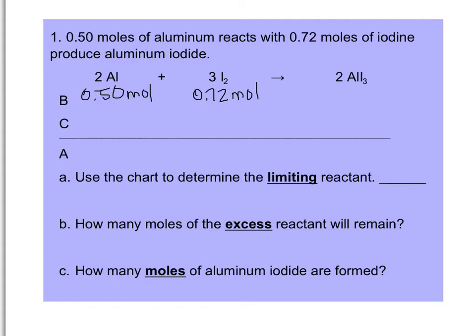The next — and trickiest — part is figuring out which element will run out and which will have some left over when the reaction is complete. To do that, we use basic stoichiometry: take a starting amount, go up and divide by its coefficient, then go over and multiply by the coefficient of the other reactant. The calculated amount goes on the change line — and this is a major difference from standard stoichiometry problems.